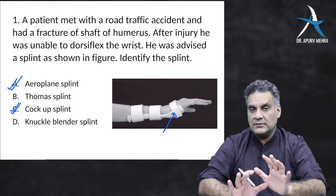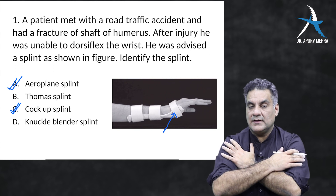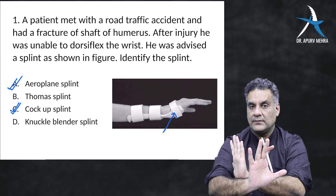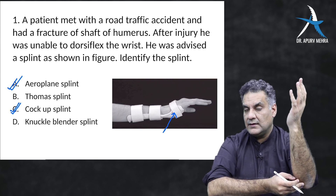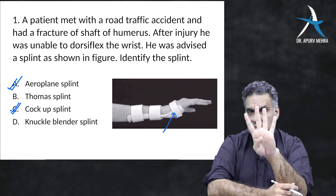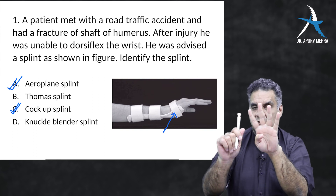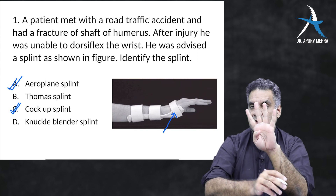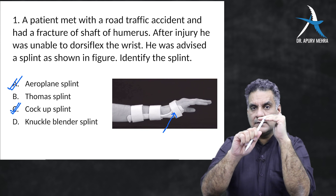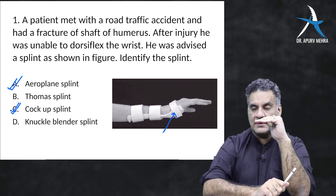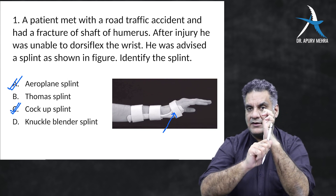The aeroplane splint is not commonly used now but is classically tested. At the humerus level, the radial nerve causes wrist drop — cock-up splint. Third, around the elbow behind the medial epicondyle is the ulnar nerve. There are four lumbricals: the first two are supplied by the median nerve, the third and fourth by the ulnar nerve. The action of lumbricals is to make an 'L' in your hand. If the lumbricals are paralyzed, there will be claw hand — hyperextension of the metacarpophalangeal joint and flexion of the interphalangeal joint.